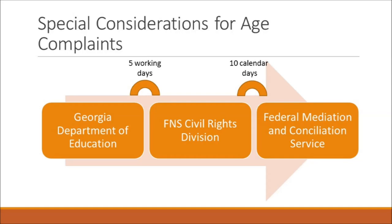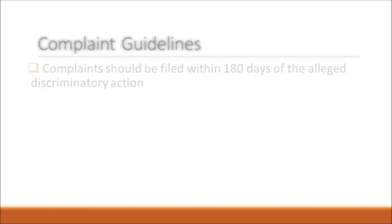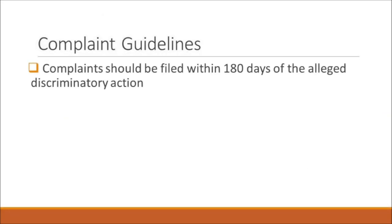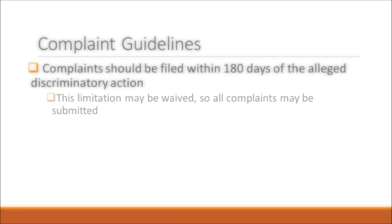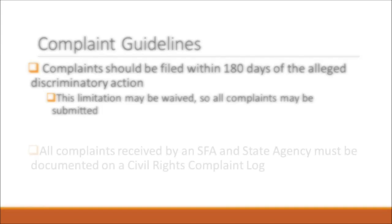If FMCS mediation is successful, FMCS will notify the FNS Civil Rights Director so that the case can be closed. If mediation is unsuccessful, FMCS will refer the complaint back to the FNS Civil Rights Director, who will investigate allegations related to age as well as any other discrimination alleged in the initial complaint. Civil rights complaints should be filed within 180 days of the alleged discriminatory action, although the Assistant Secretary for Civil Rights may waive this time limitation.